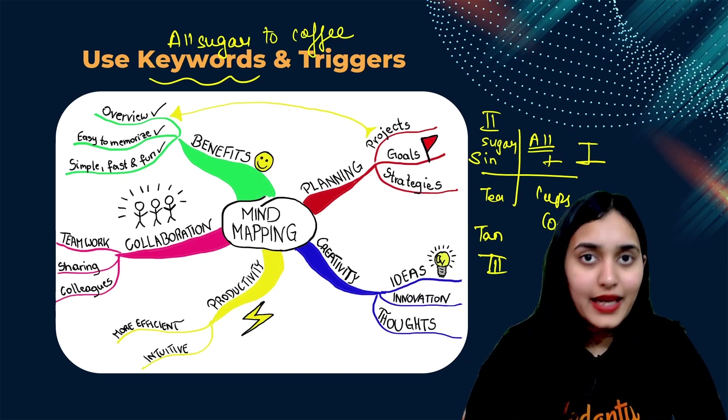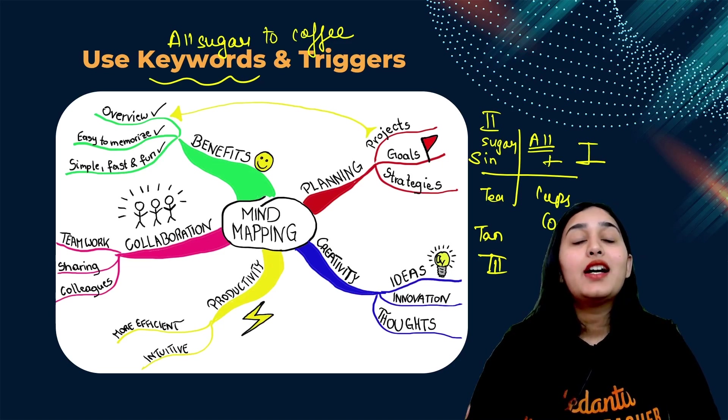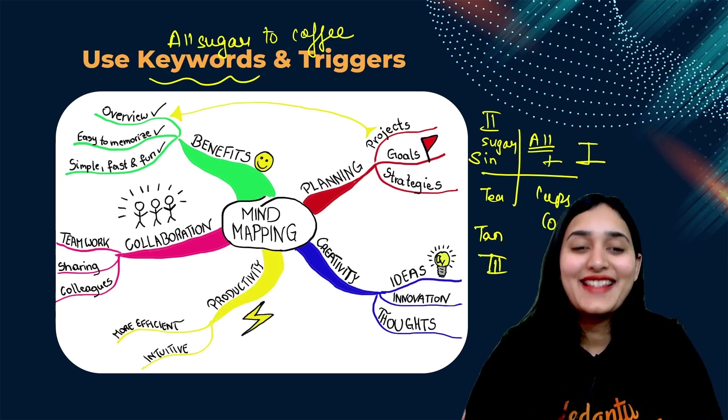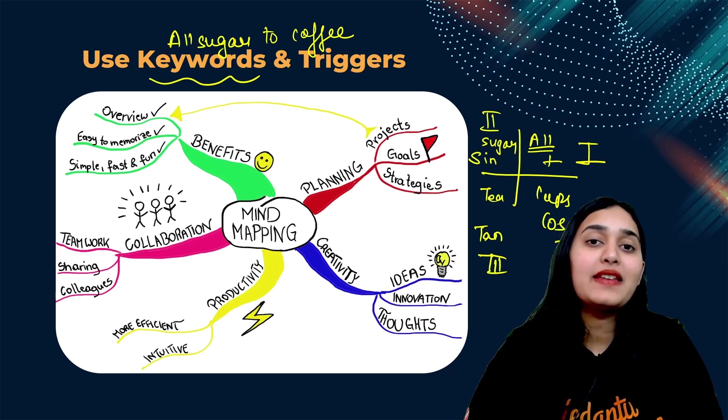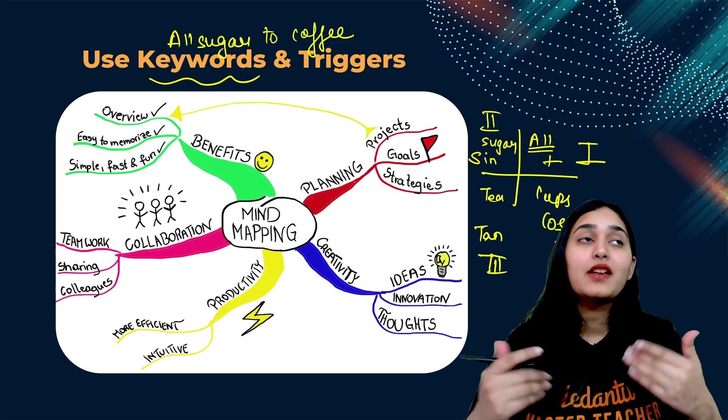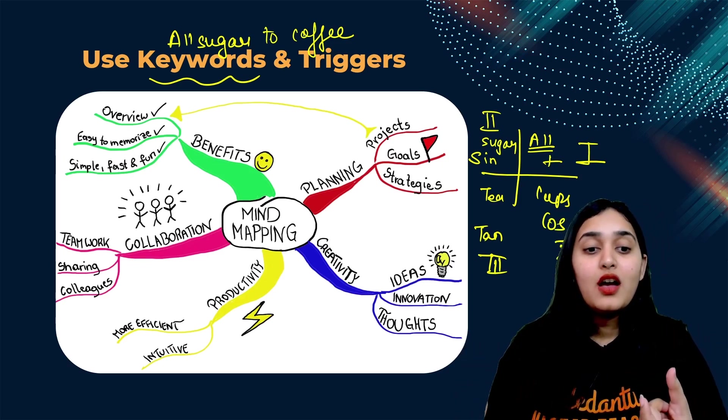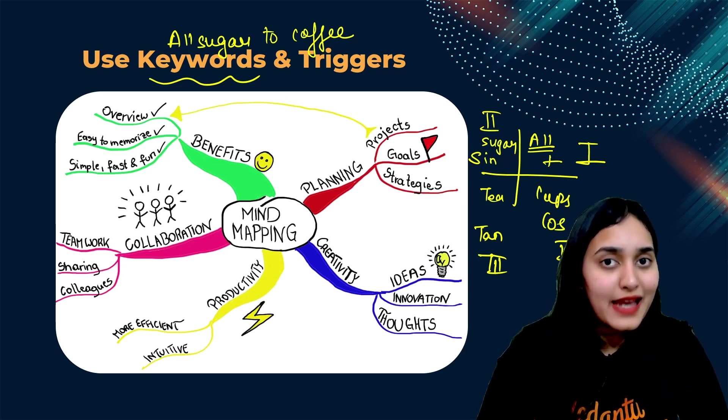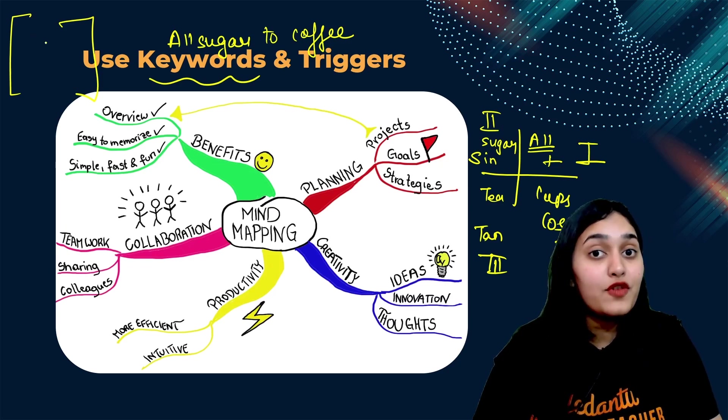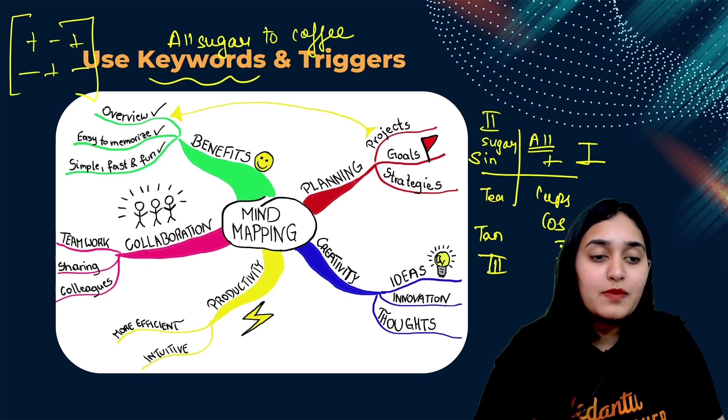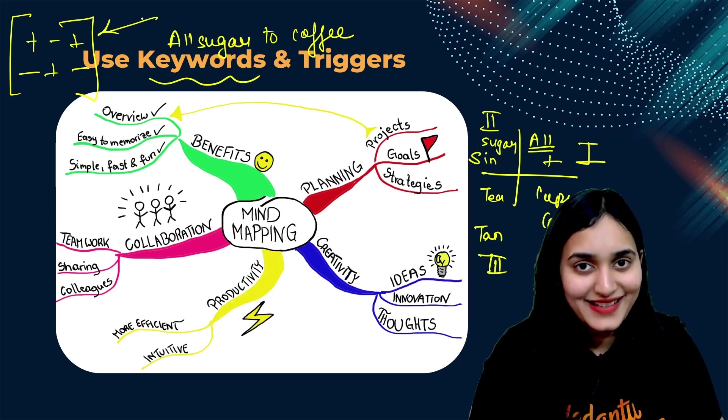So again, try to use these keywords, which will trigger your memory in the exam that, okay, you have to remember this and you have to basically do it like this. For example, sometimes students get confused between signs. So you can use, you can make your own keyword for sign also. In matrix also, when you find out determinant, you have to follow sign that it is plus, minus, plus. It is minus, plus, minus. So use a certain keyword for that so that you remember it in the exam.